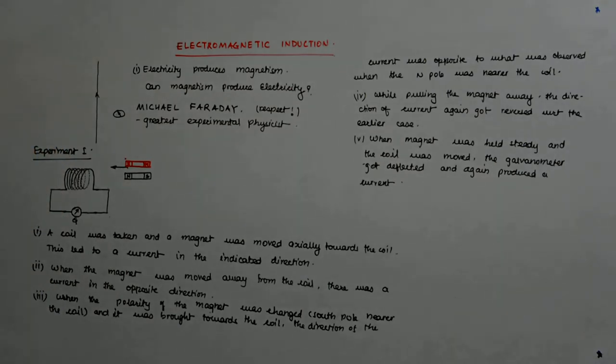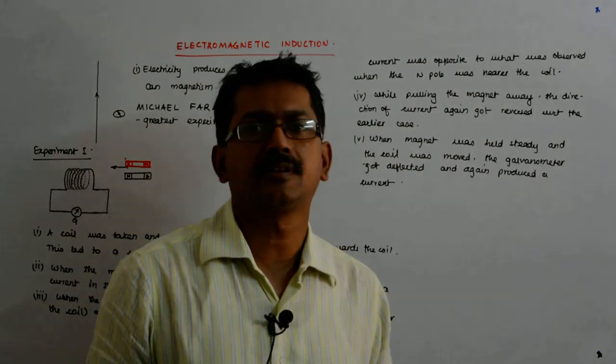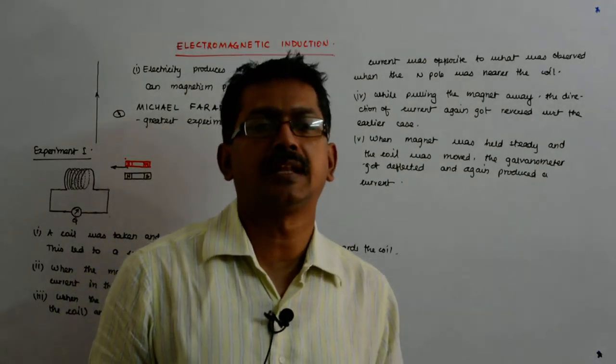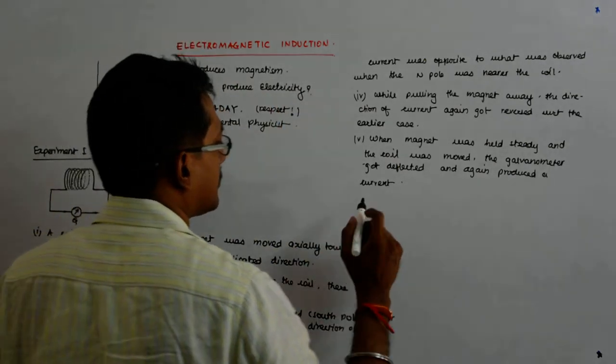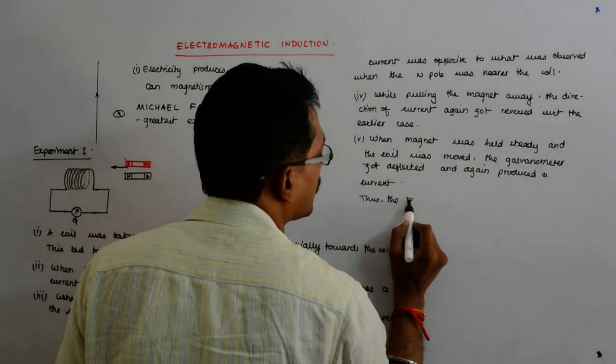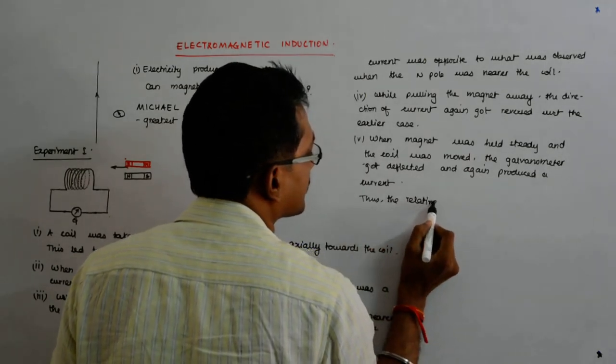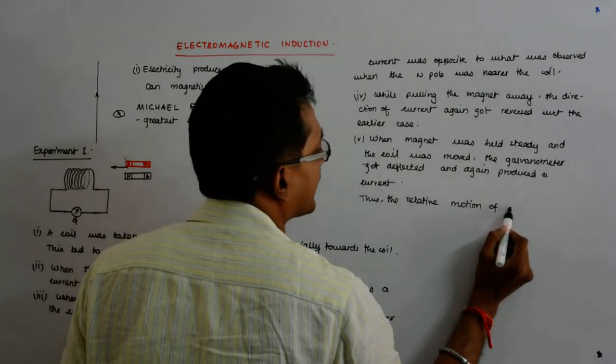Now what was that telling him? It was neither the magnet nor the coil movement that was producing the current. It was the relative movement between the coil and the magnet that was actually responsible for the current. So it's the relative motion of the coil and the magnet.